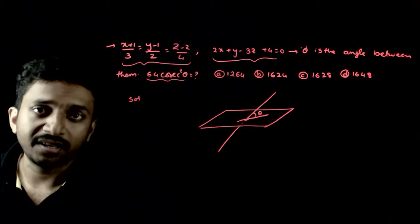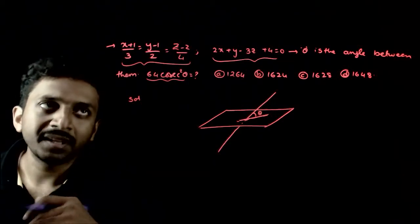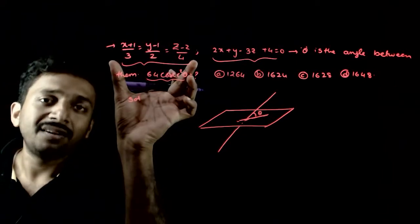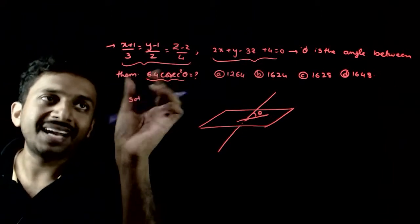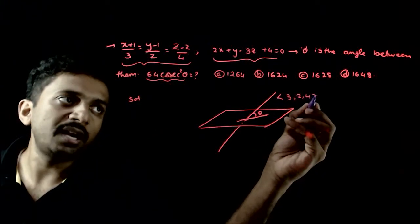Questions kaise karte hai? If you want an angle between the plane and the line, both standard question hai. Because, if you see the equation of the line, the direction ratios of the line are 3, 2 and 4.